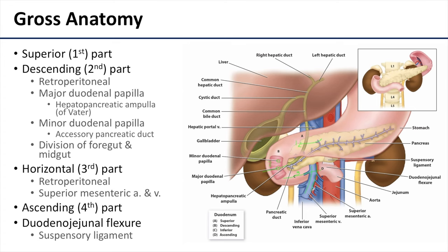Here is where the duodenum is at risk for superior mesenteric artery syndrome — an impingement upon the third part of the duodenum between the abdominal aorta and the superior mesenteric artery.